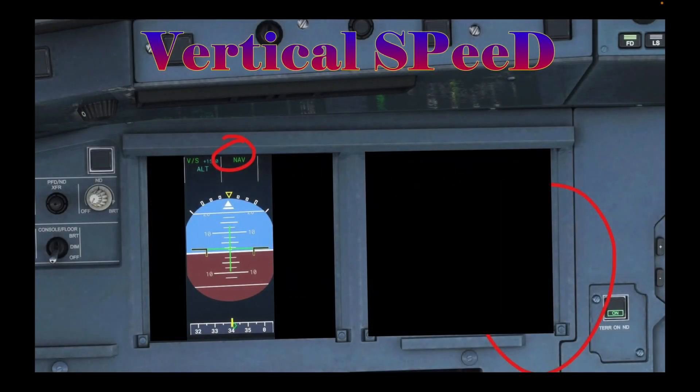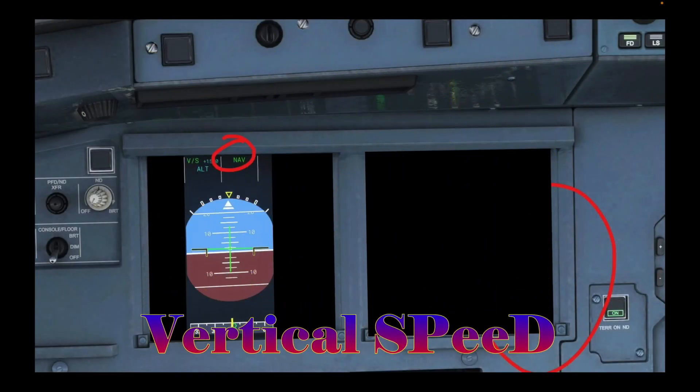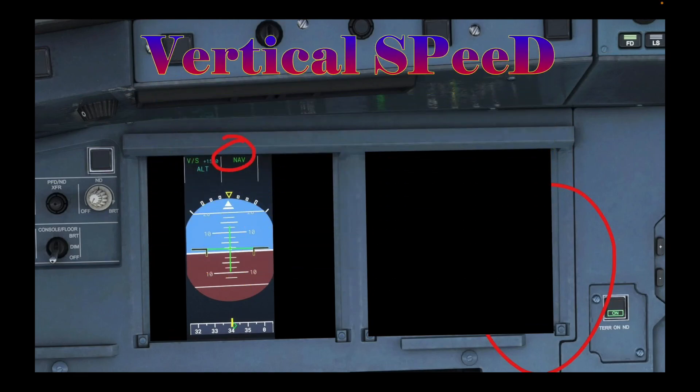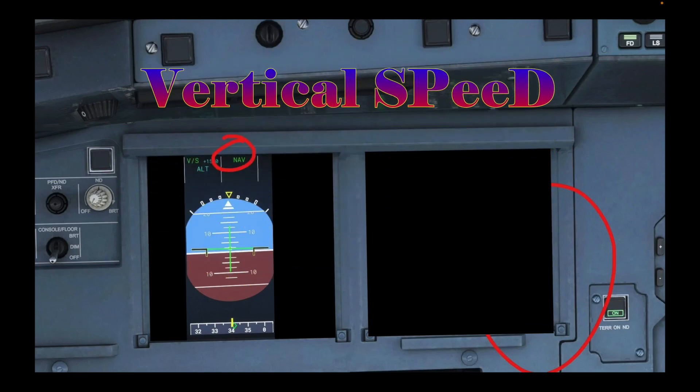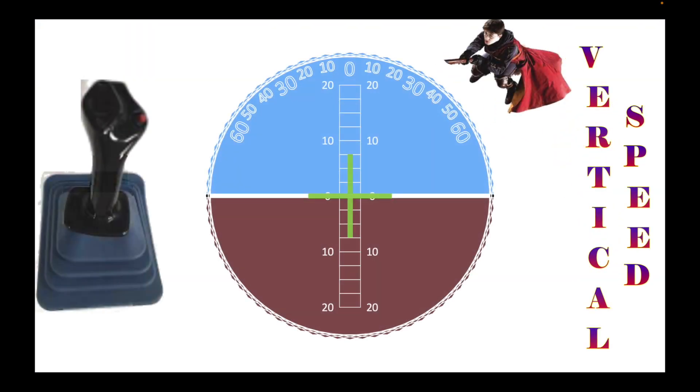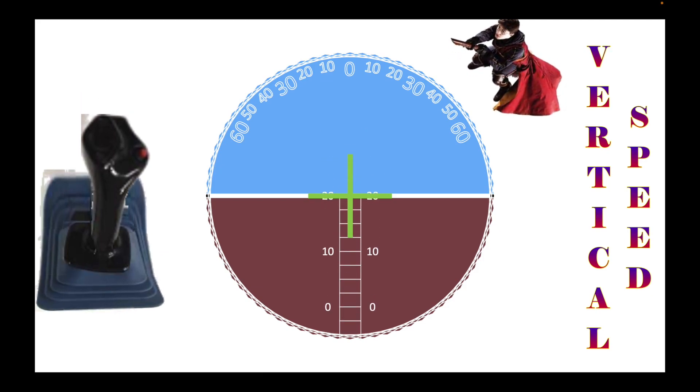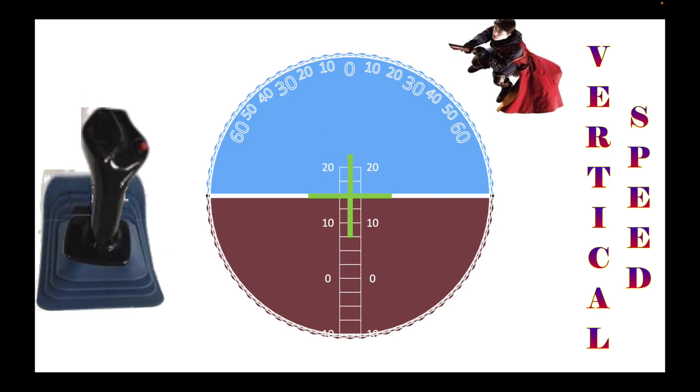The fourth instrument we will be discussing here is the vertical speed indicator. How fast am I going up or down? This indicator shows the airplane's rate of climb or descent by measuring how fast the static pressure changes as the aircraft climbs or descends.